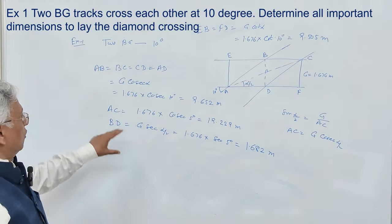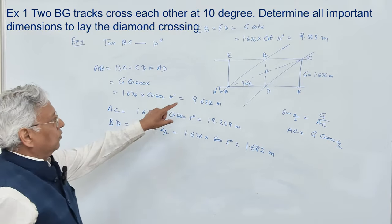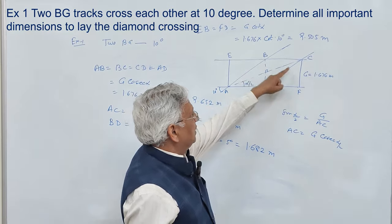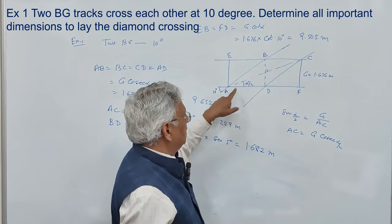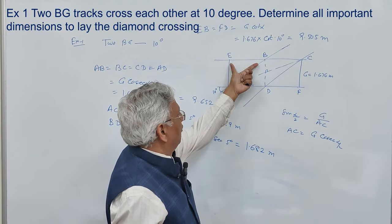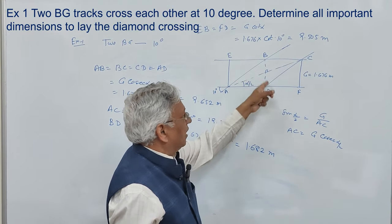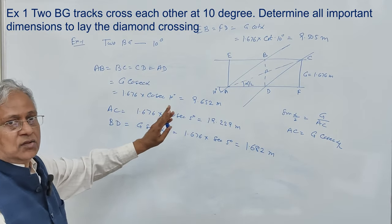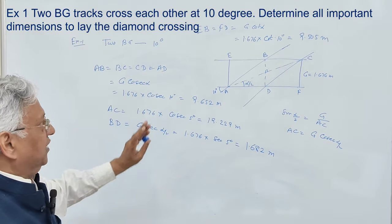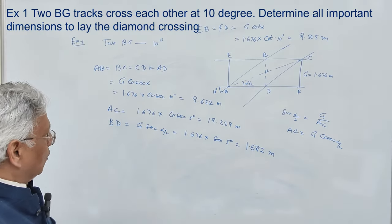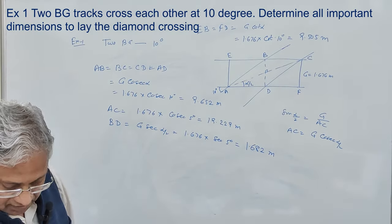Now you know all dimensions: the angle, sides AB, BC, CD, DA, offsets E and F, and the two diagonals. You can set this crossing in the field. That is how a diamond crossing is designed.